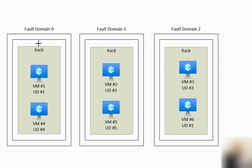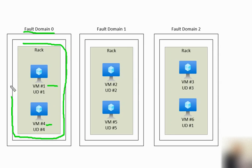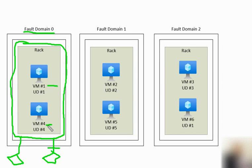In this diagram I am explaining how fault domains are organized. Fault domain 0 contains virtual machines — for example VM 1 and VM 4. This is one hardware rack with a common power supply and a common network switch. If that switch goes down, all VMs under this rack will go down. So VM 1 and VM 4 are under the same fault domain.